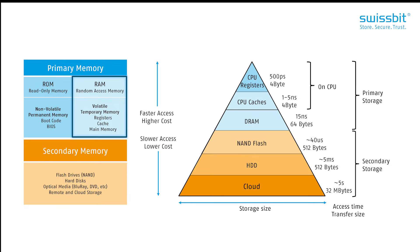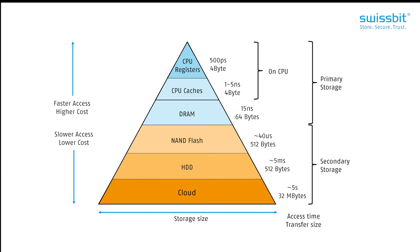RAM, as its name suggests, is randomly accessed. It's volatile, meaning it needs power and acts more as temporary memory. This is where registers, caches, and the main memory are stored. Ultimately, the further down the pyramid one goes into secondary memory, the slower, larger, and cheaper the storage becomes. At SwissBit, alongside our security solutions, our core business in regards to memory is based on this section — the NAND flash part of the pyramid.